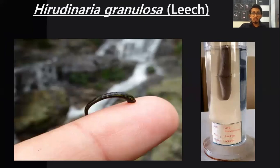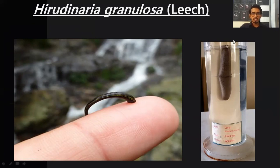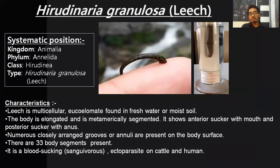The last specimen is Hirudinaria granulosa, commonly called leech. The stored specimen looks like this — the leech is usually smaller in size, but as it sucks blood it increases to almost two to three inches in size, though it differs from one species to another. Systematic position: it belongs to kingdom Animalia, phylum Annelida, class Hirudinea. The type specimen is Hirudinaria granulosa, commonly called leech.